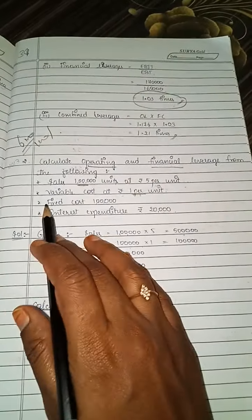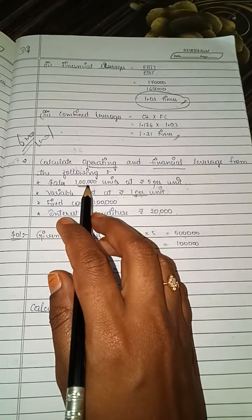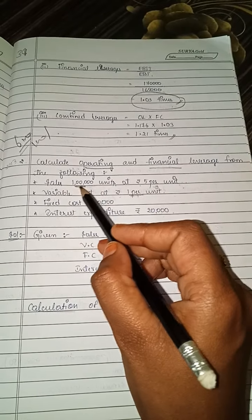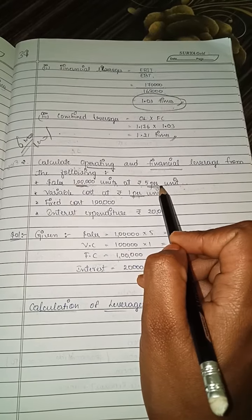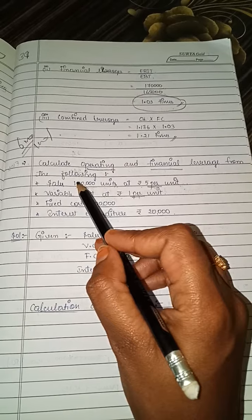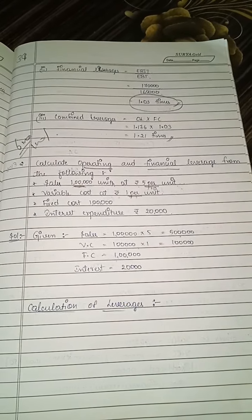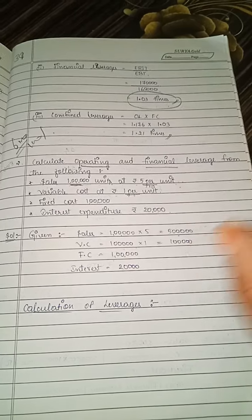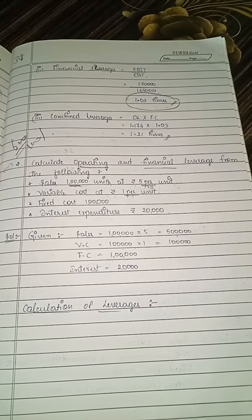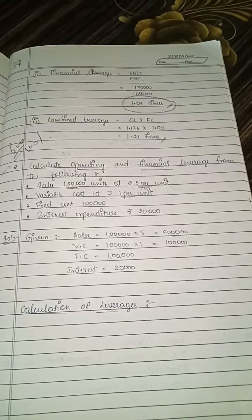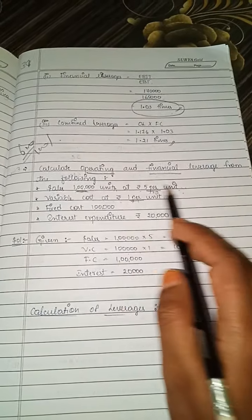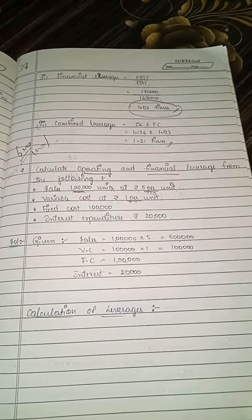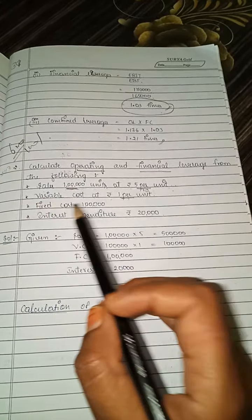In this problem, they have given sales as 1 lakh units at rupees 5 per unit. So directly they have given 1 lakh units at rupees 5 per unit, so we have to multiply 1 lakh into 5 to get the total sales amount. Some problems give the sales amount directly, while others give units and per unit value — in that case you multiply them.